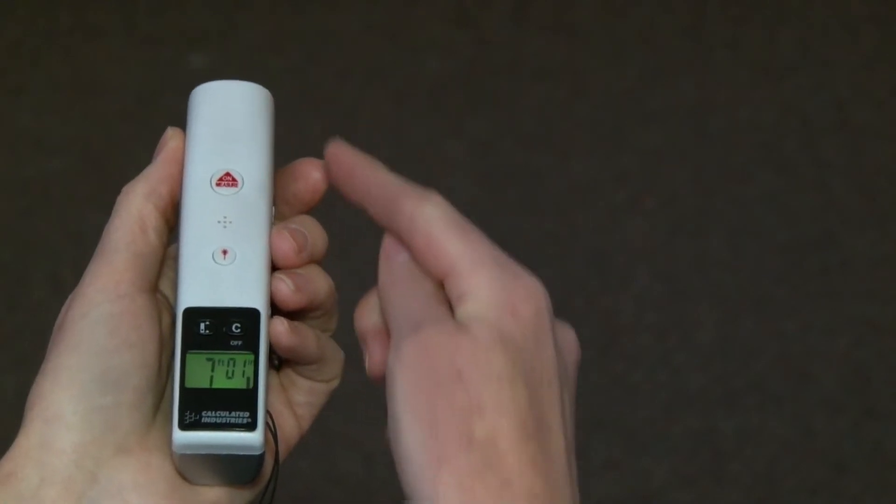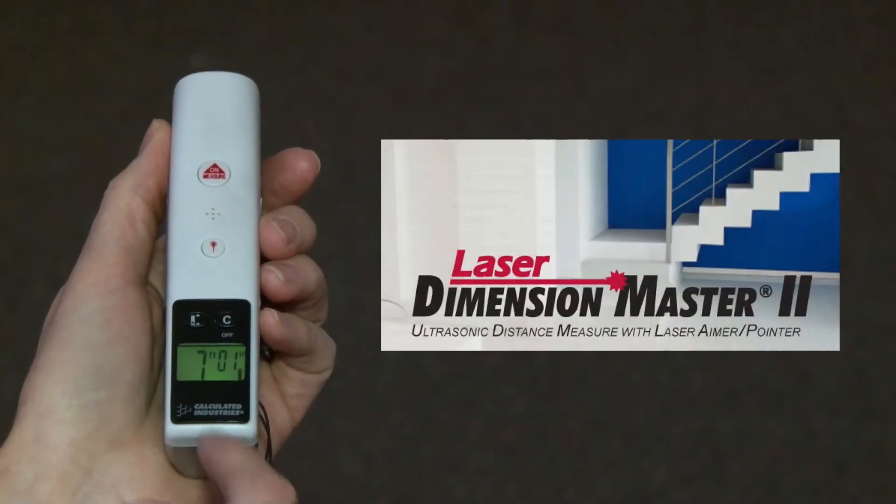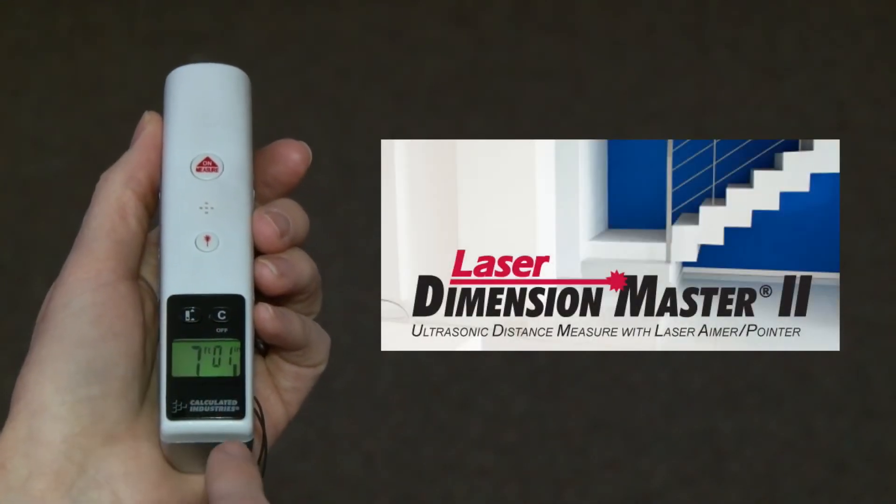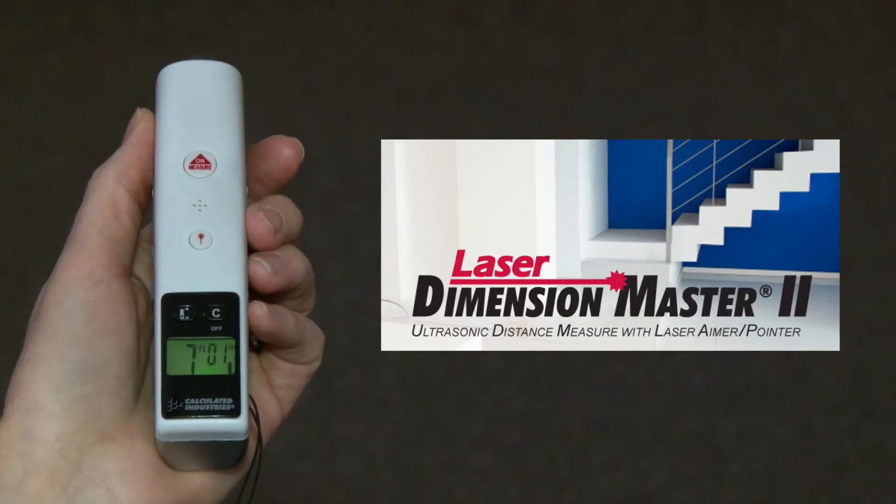You can choose to measure from the front of the unit or the back of the unit by simply pressing the front back button here and then viewing the symbol in the lower right hand corner of the LCD.